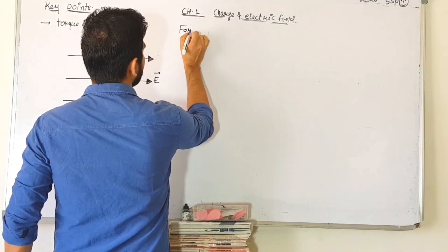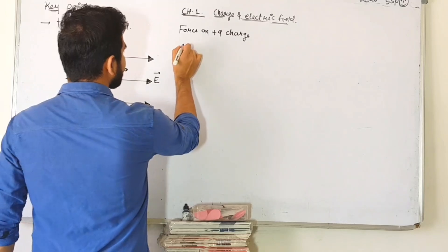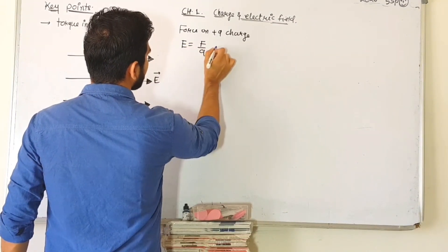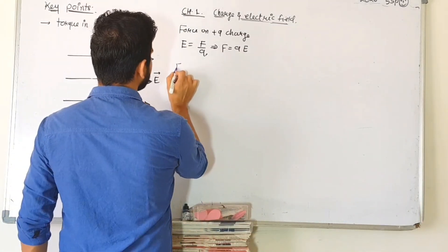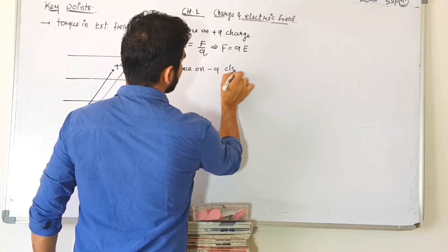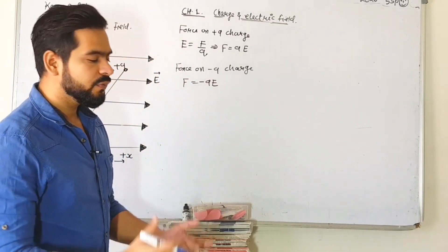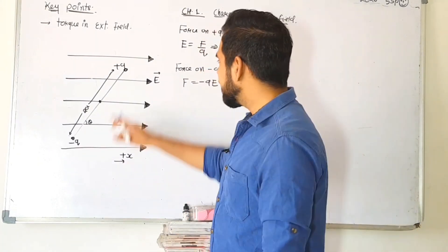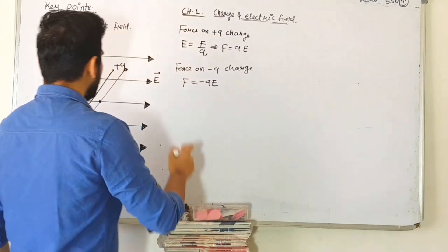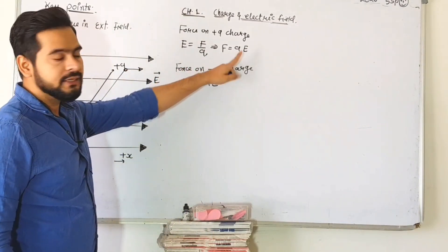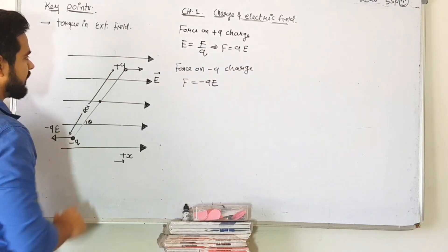So let's start writing the theory. Force on the plus q charge: using E equals F divided by q, the force F equals q into E. In the same way we can find the force on the minus q charge. For the negative charge, the force F equals minus q into E. Now where will be the direction of these forces? For the positive charge, the force will act in the positive x direction — that is plus q into E. For the negative charge, the force will act in the opposite direction — that is minus q into E.